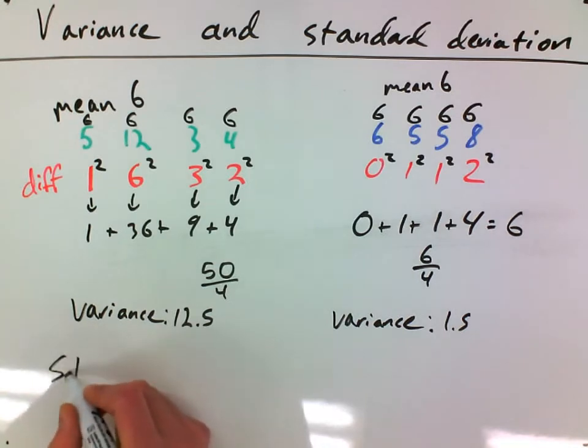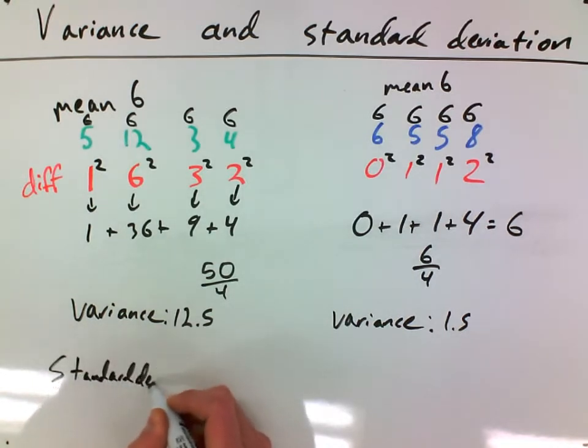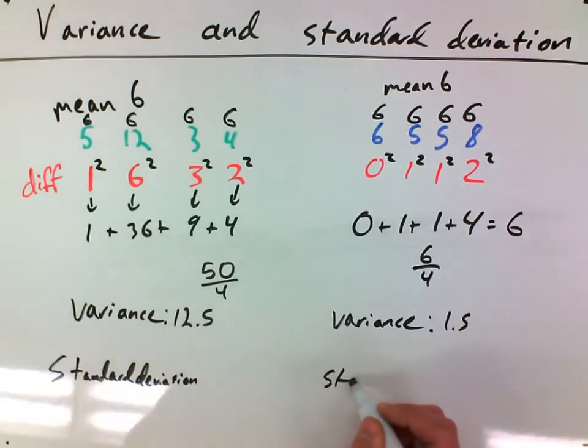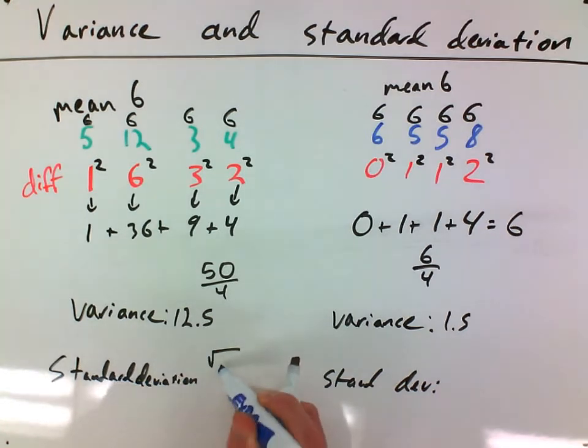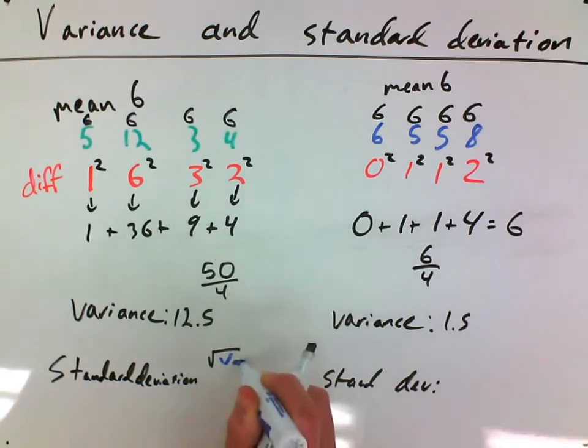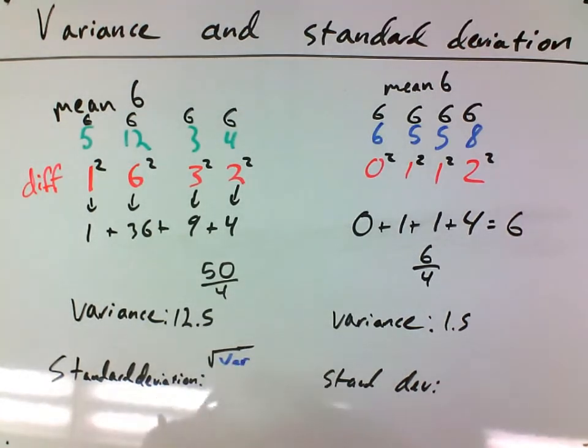Standard deviation is kind of easy to find after we got this far. So the standard deviation over here, basically what we've got to do is take the square root of the variance. So I'm going to take the square root of the variance. And so for the standard deviation over here, that's just the square root of 12.5.